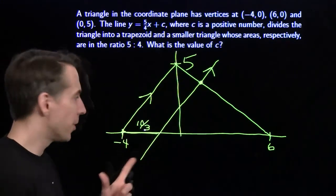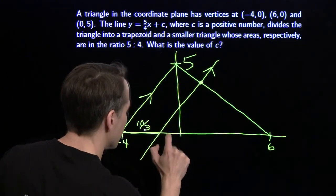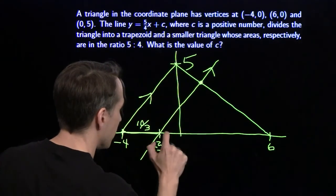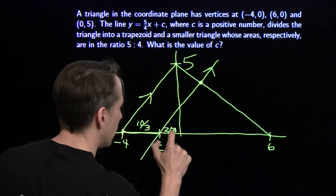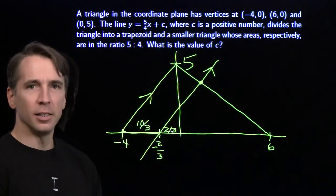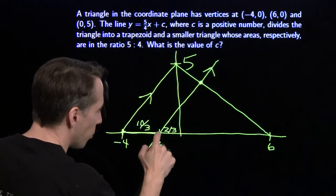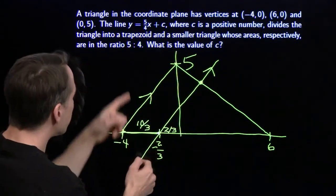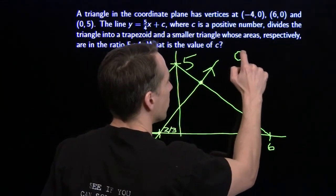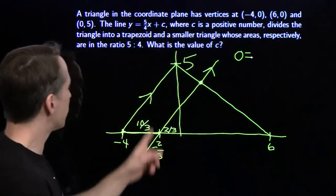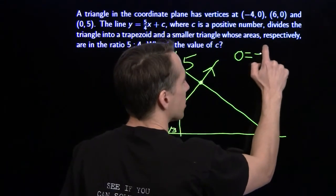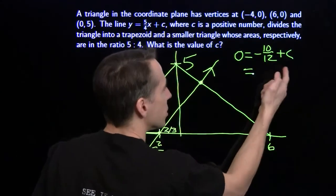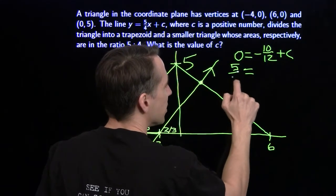And 4, well, 4 is 12 thirds. That tells me that this length over here, this length is 2 thirds. So this point right there is negative 2 thirds. And this length is 2 thirds. And now, now I can find c. I can find c because I know this line goes through this point right here, which is negative 2 thirds 0. So I can just plug it right back in there. I know that negative 2 thirds 0 has to satisfy this line, y0. Stick negative 2 thirds in for x, I get negative 10 twelfths plus c. Yeah, let me do my algebra. So c, I can simplify that to 5 sixths. I get c is 5 sixths.